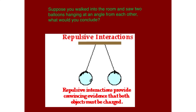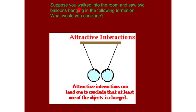Suppose you walked into a room and you saw two balloons hanging from the ceiling that were apart from each other. What would you conclude? You'd probably say there was a repulsive force between them, and you would also say they must have the same charge. Suppose you walked into the room and you saw two balloons hanging down right next to each other. You'd say there's probably an attractive interaction between them, and therefore they must have opposite charges.